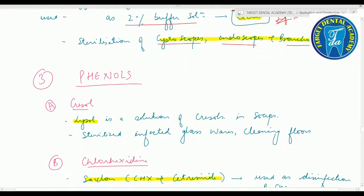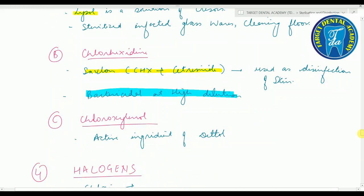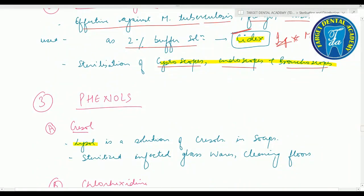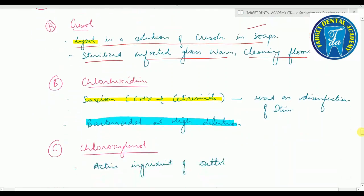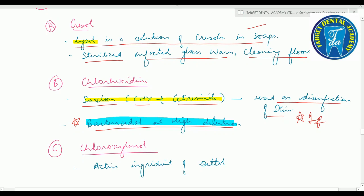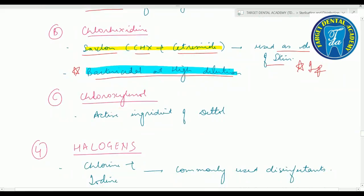Phenols include cresol (Lysol), chlorhexidine, and chloroxylenol. Lysol is a solution of cresol in soap, used to sterilize infected glassware and clean floors. Chlorhexidine (Savlon = chlorhexidine plus cetrimide) is used for disinfection of skin — bactericidal at high dilution. Chloroxylenol is the active ingredient of Dettol.